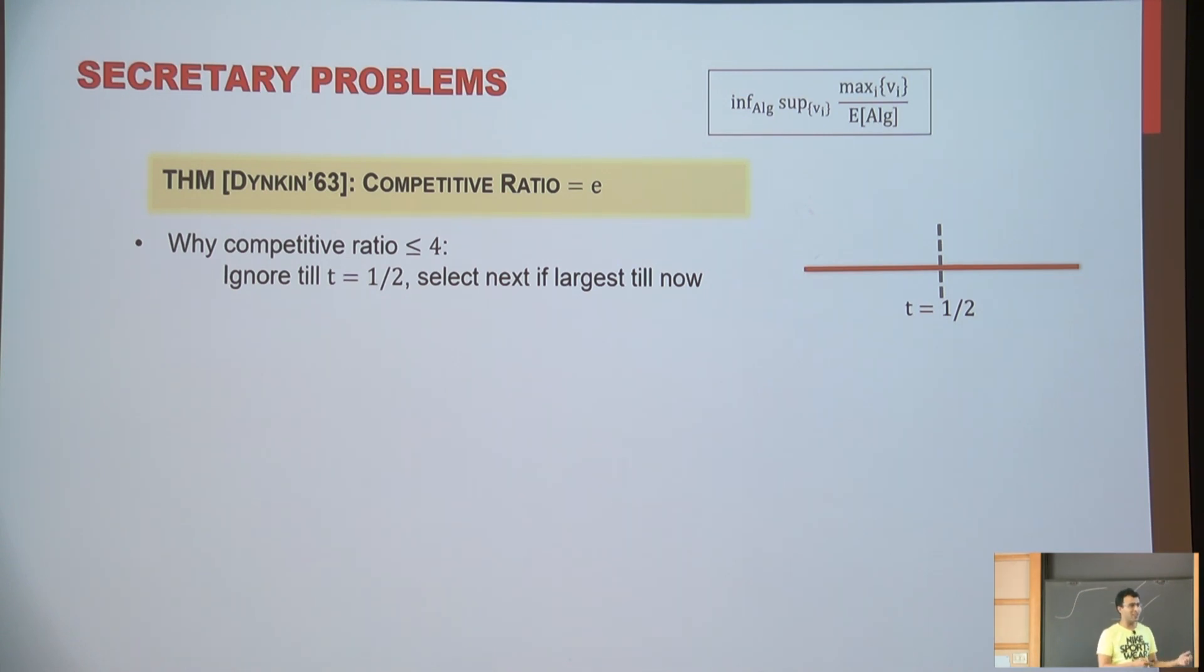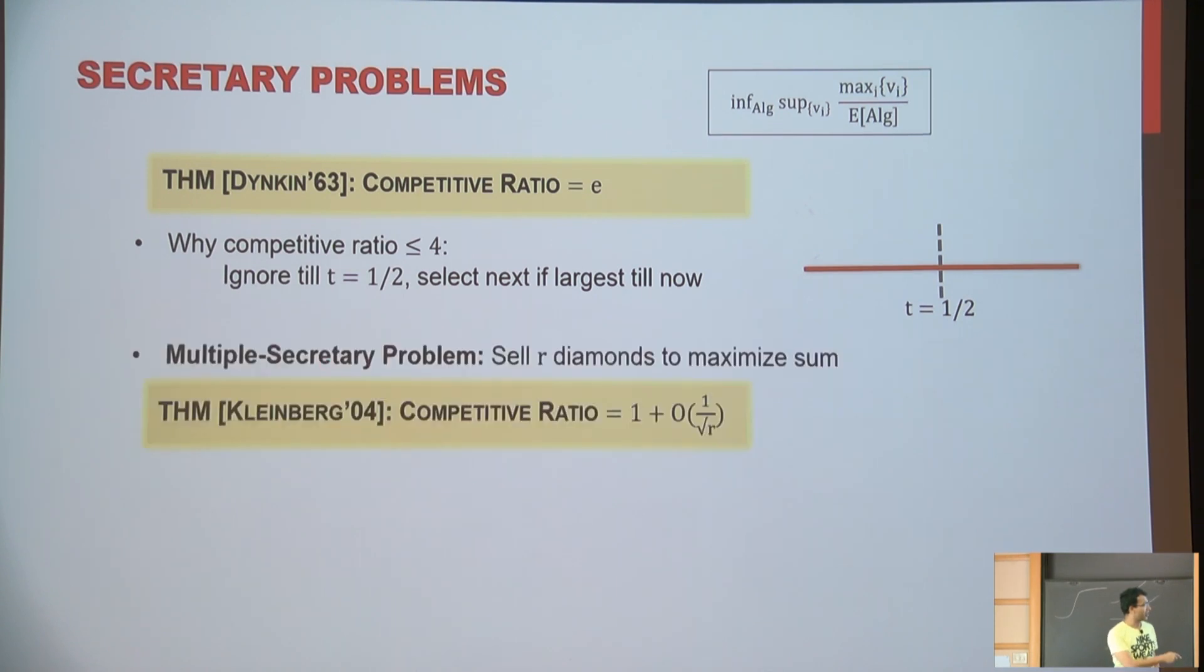And the reason it works is because with half probability, the buyer with the largest value is going to arrive in the second half. And the buyer with the second highest value is going to arrive in the first half. So if you condition on both the events, which happens with quarter probability, you'll definitely get the highest buyer. But you can be a little more careful, put this threshold rather than at half, put it at one over E, and do a careful calculation, then you can show the competitive ratio is actually E.